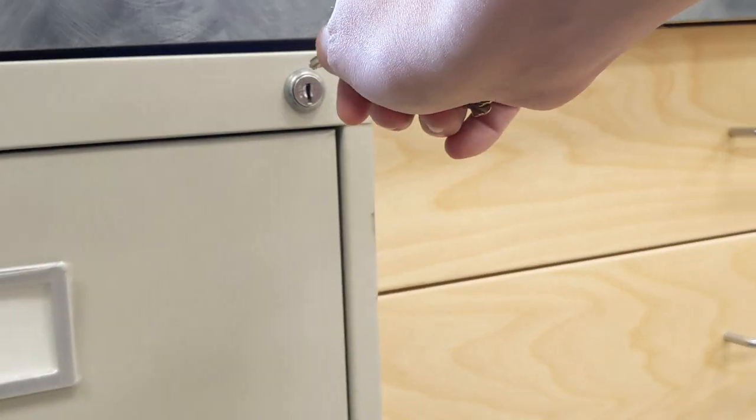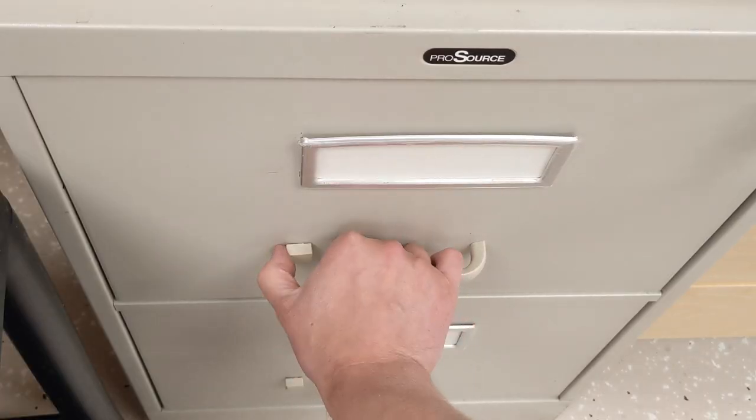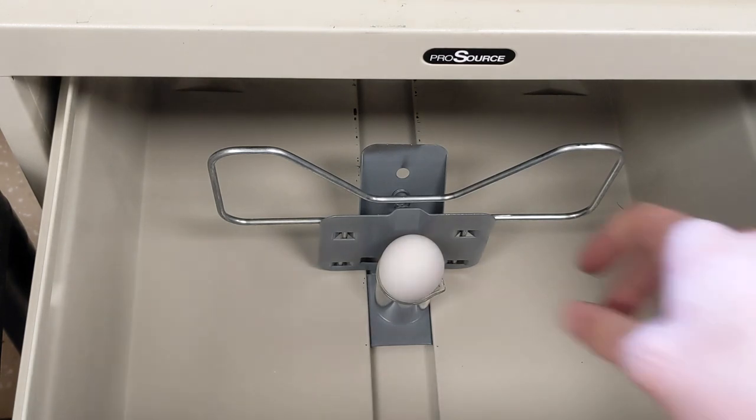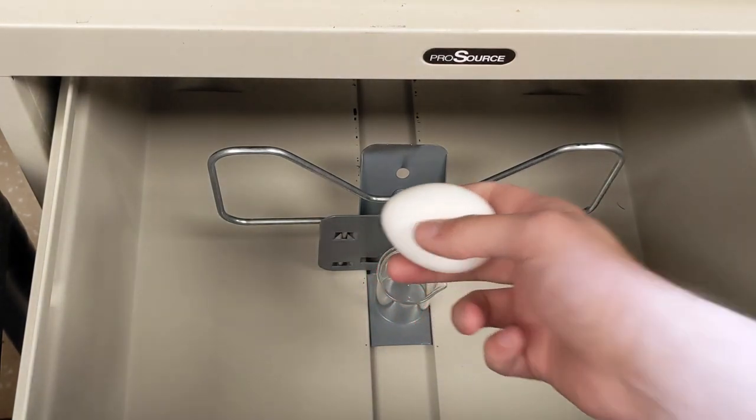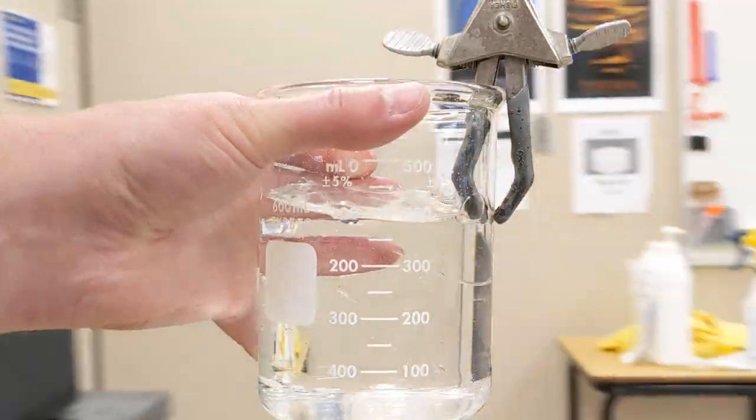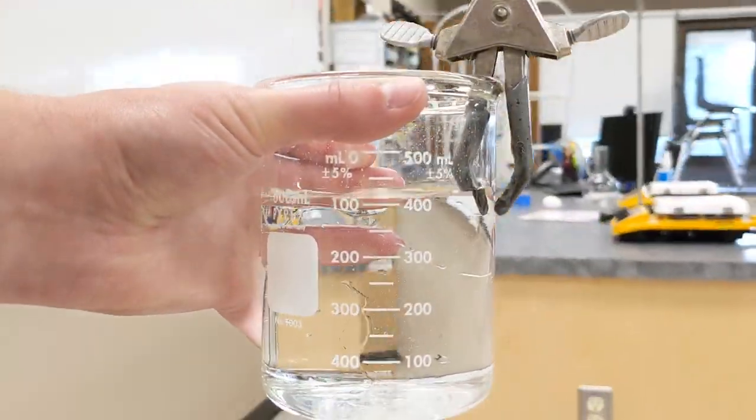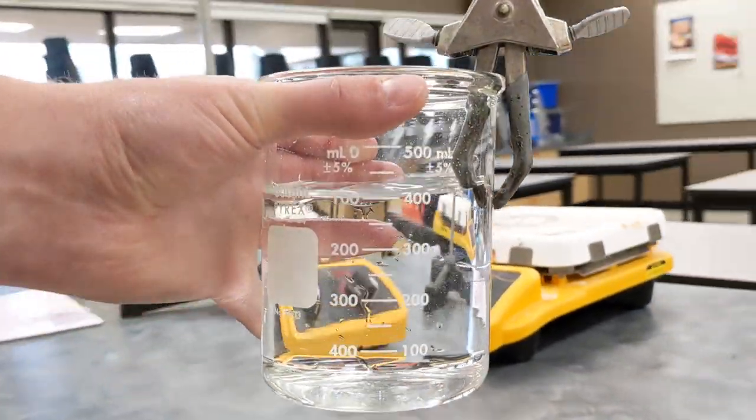Some things in the chemistry lab are so dangerous they need to be kept under lock and key. This is a science egg, laid by the finest science chickens of northern central Alberta. Let's see if we can use it to help demonstrate the properties of gases.